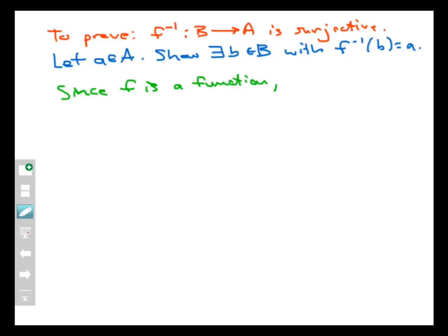Since f is a function, f must map a to something in B. Let's say f of a equals y in B. But now the proof is basically automatic. Since f of a equals y, the definition of inverses tells us that f inverse of y equals a. And then we're done, because we started with a, and found a point in B, namely little y, that maps to it.